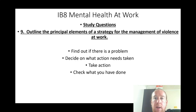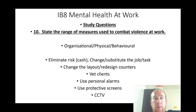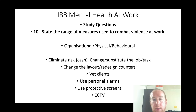Outline the principal elements of a strategy for managing violence at work: find out if there's a problem, decide what action needs to be taken, take action, and check what you have done. State the range of measures: organizational, physical, and behavioural — eliminate the risk, change or substitute the job or task, change the layout or redesign counters, vet clients, use personal alarms and buzzers, protective screens, and CCTV.